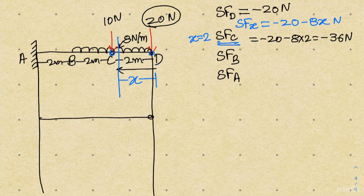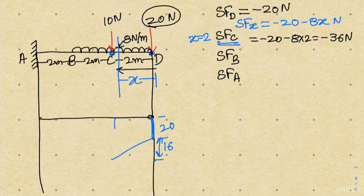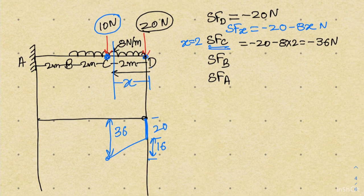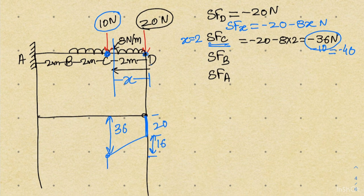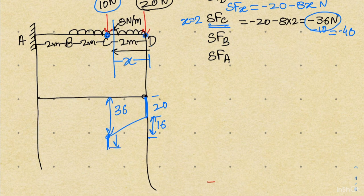Drawing the shear force distribution: at D the shear force is minus 20. Moving toward C, the shear force increases — the increment due to the UDL over 2 meters is 16 newton, making the total shear force at C equal to minus 36 newton. At point C there is another point load of 10 newton acting downward, so we add 10 newton at point C itself. This changes the shear force from minus 36 to minus 46 newton at C.